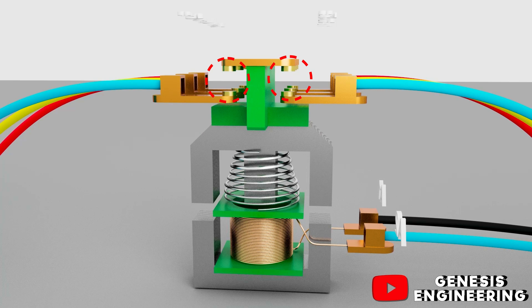For the contactor to start working, it is necessary to energize its coil, which are contacts A1 and A2. When your coil is energized, an electromagnetic field is created around it.